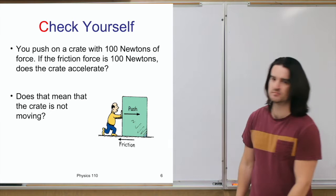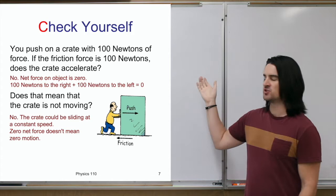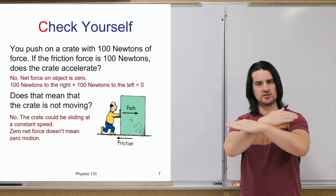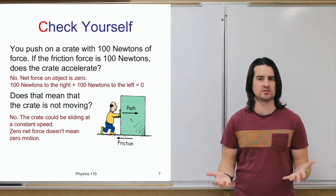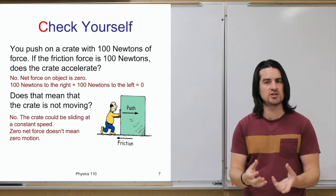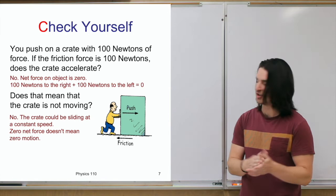For the first question, the crate is not going to be accelerating because the net force is 100 newtons one direction and 100 newtons the other — they cancel each other out, giving zero net force, which means no acceleration. But does that mean the crate is not moving? No — it doesn't necessarily mean that. All it tells us is that the object is not accelerating, meaning it's not changing its velocity. The object could be moving at a constant speed, or it could be at rest.